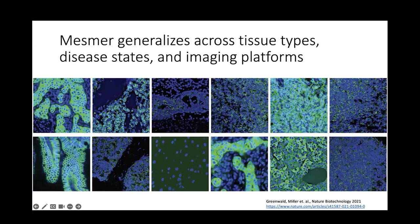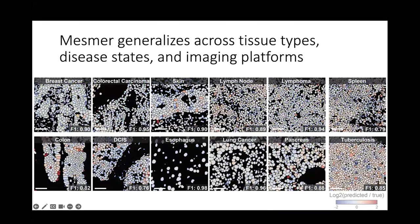With this large labeled dataset, we created a deep learning pipeline called Mesmer for simultaneous nuclear and whole-cell segmentation of tissue imaging data. Mesmer's best feature is that it generalizes across different tissue types and imaging platforms. We see whole-cell segmentation predictions produced by Mesmer, along with associated F1 scores. We found Mesmer to be so accurate that when we compared its performance to human performance, it was able to perform whole-cell segmentation with accuracy on par with what humans can do. More information is available in our paper in Nature Biotechnology.